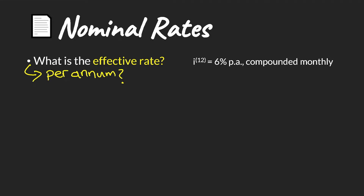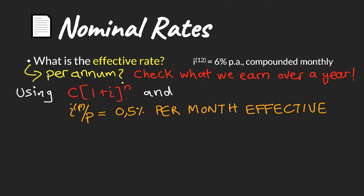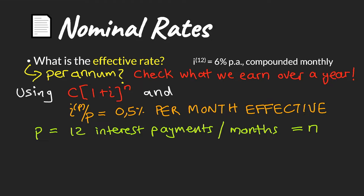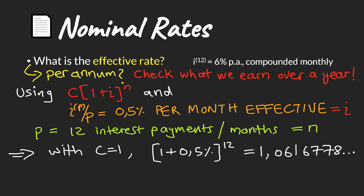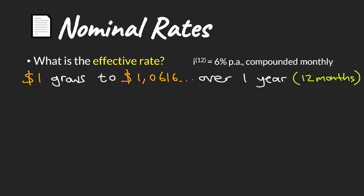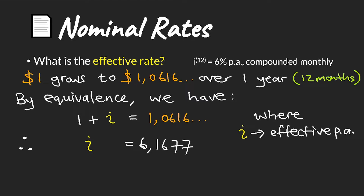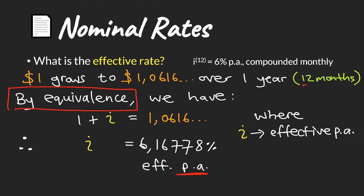What about an effective rate for the whole measurement period — in this case per annum? To work this out, we need to calculate what we would earn as a return over 12 months using our compound interest formula. We have an effective rate per month and we know there are 12 months in a year. We work out the future value using that monthly effective rate with a principal of 1, and we find this equals approximately 1.0616. By the equivalence principle, $1 grows to 1.0616 over a year, which means our annual effective interest rate is 6.16%.